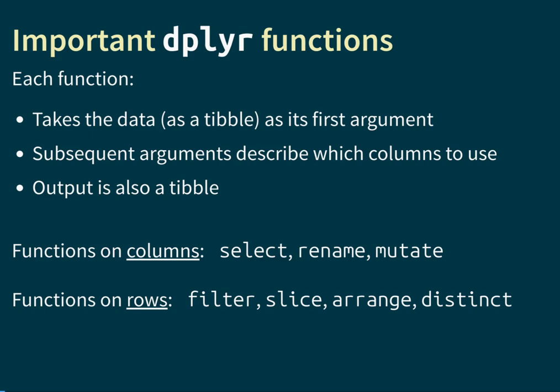Before diving into the details of how each functionality works, let us talk about what they all have in common. The functions in dplyr are designed in a transparent and consistent way so that all functions follow the same basic pattern. In particular, each function takes the data in the form of a tibble as its first argument. The subsequent inputs control how the function should do its job, and the output produced is also always a tibble.